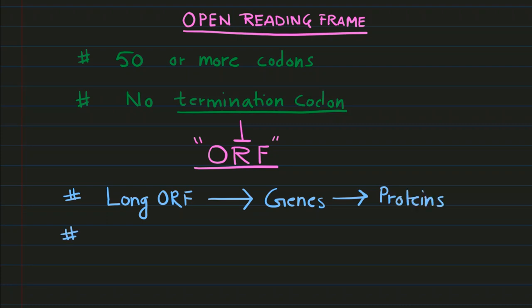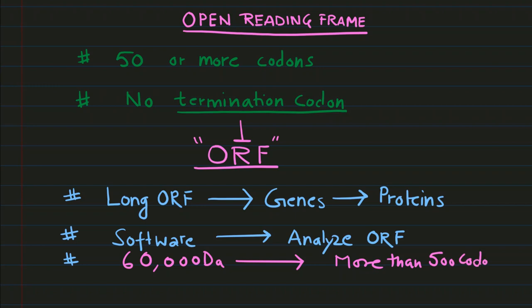There are softwares that can analyze these open reading frames. Approximately a 60,000 Dalton protein will have an open reading frame of more than 500 codons.